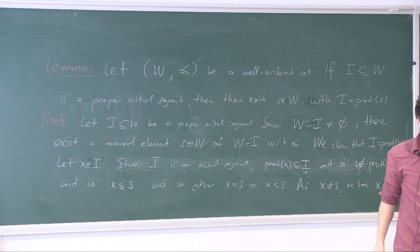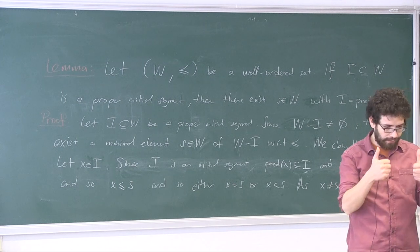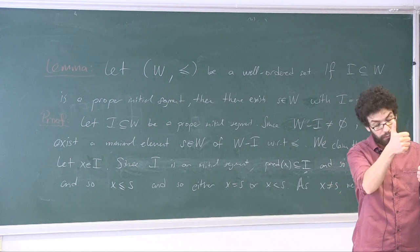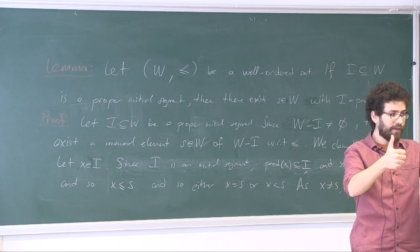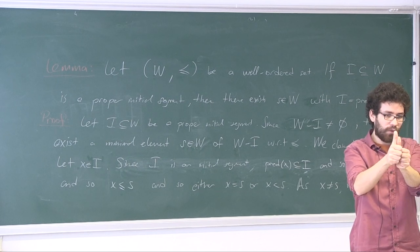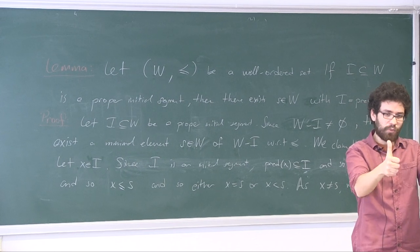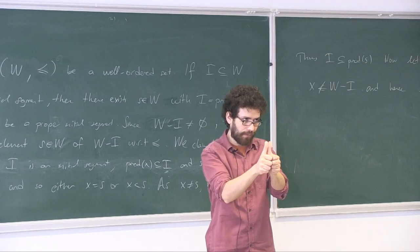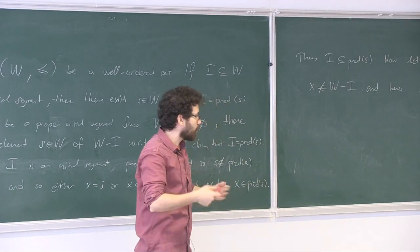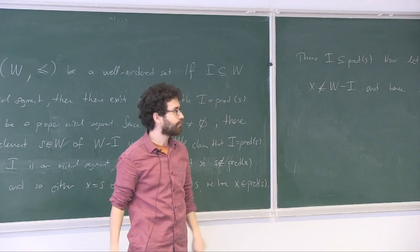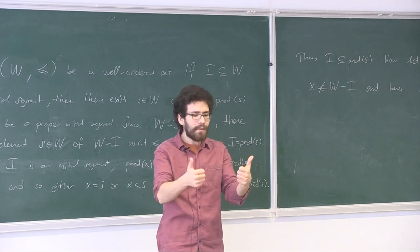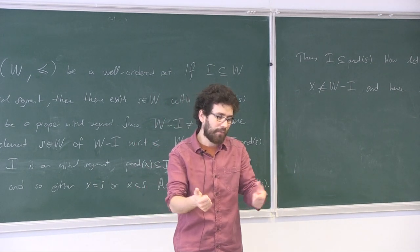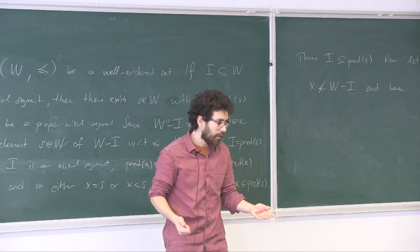Our aim today is to prove that given two well-ordered sets, one of three things happens: either this one is isomorphic to an initial segment of that one, or that one is an initial segment of this one, or they are the same — meaning isomorphic. But we need to define what isomorphism means in this setting: when are two well-ordered sets considered the same?